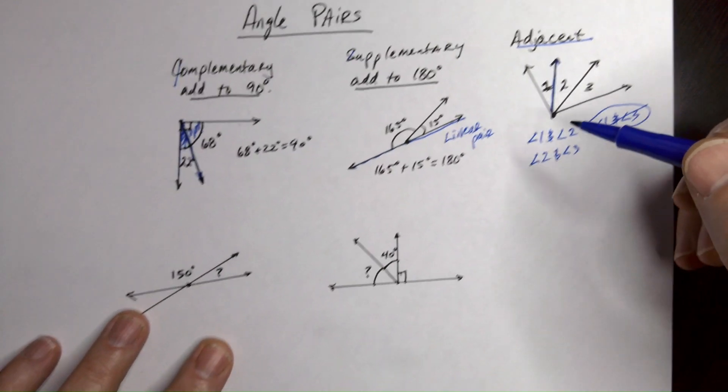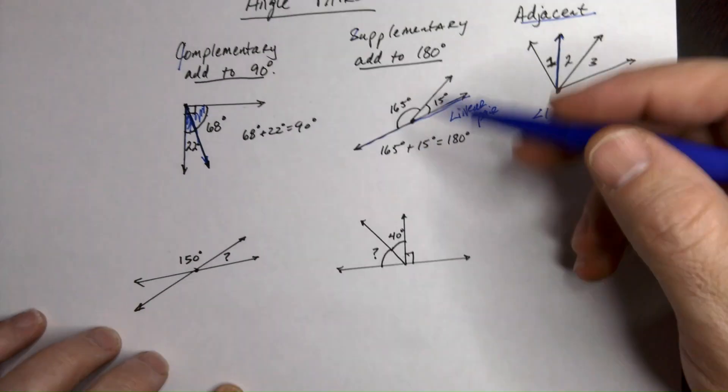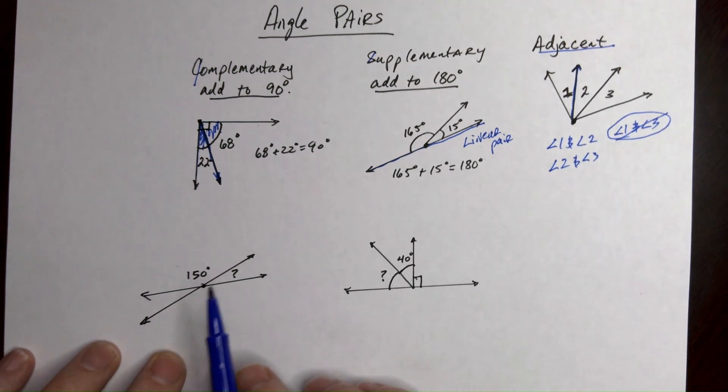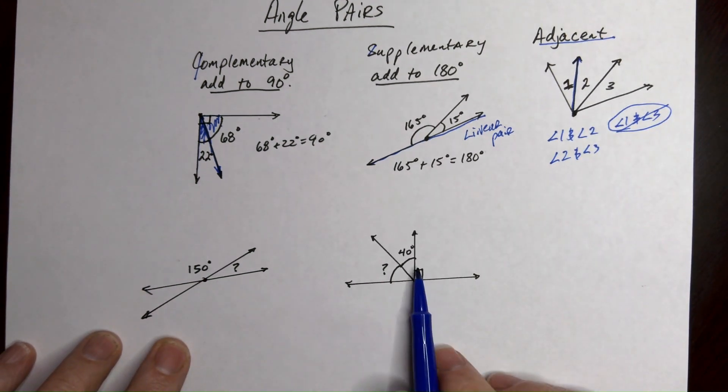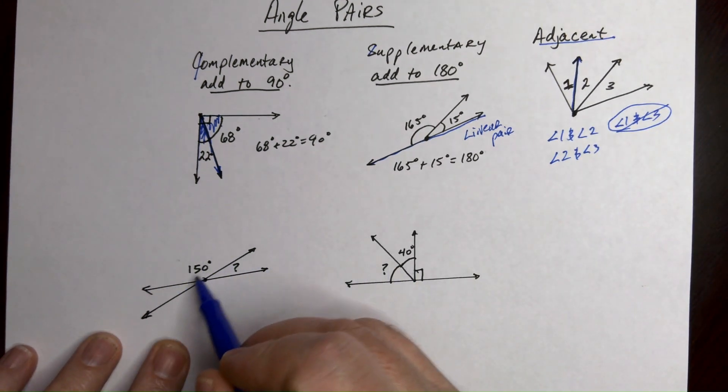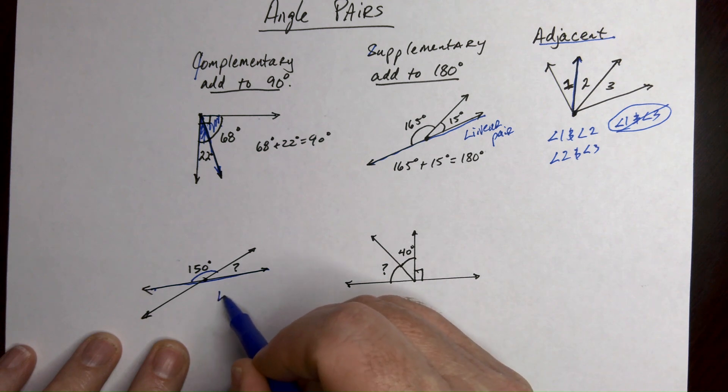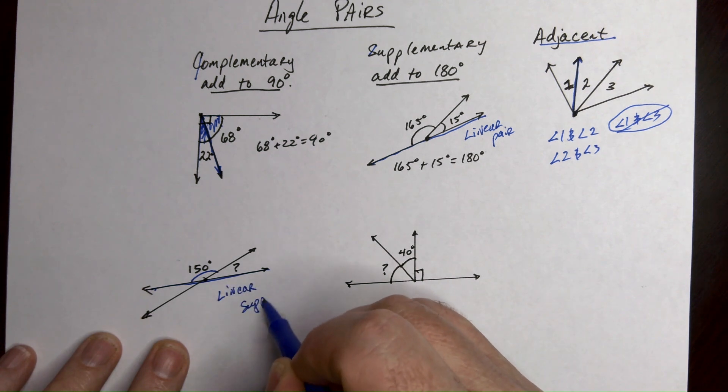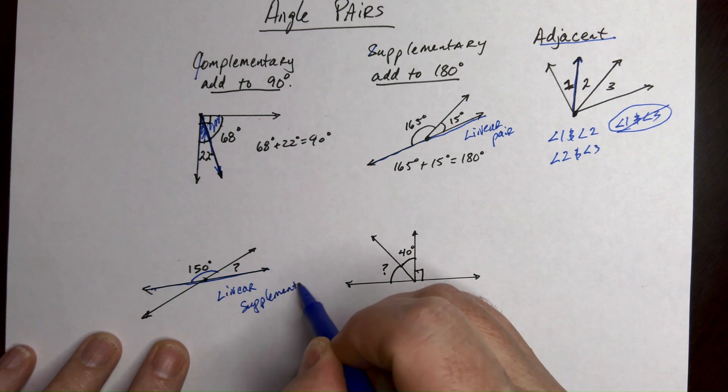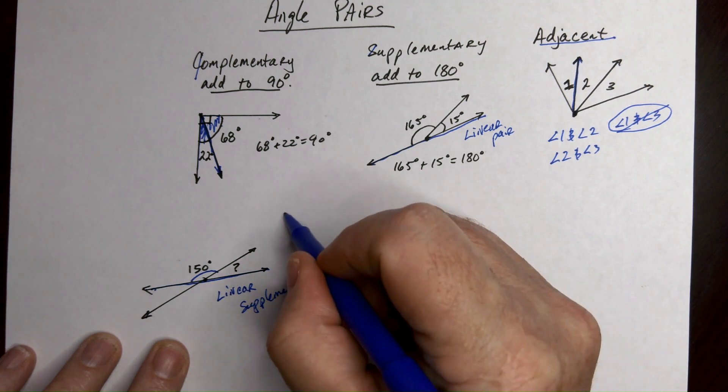All right, now some of the things you might see that you have to figure out with these kinds of relationships are things like this or like this. So if we look right here, this angle's 150 and it's adjacent to this angle with the question mark and you can see they're a linear pair. They're adjacent and they're supplementary. So that means they add up to 180 degrees.